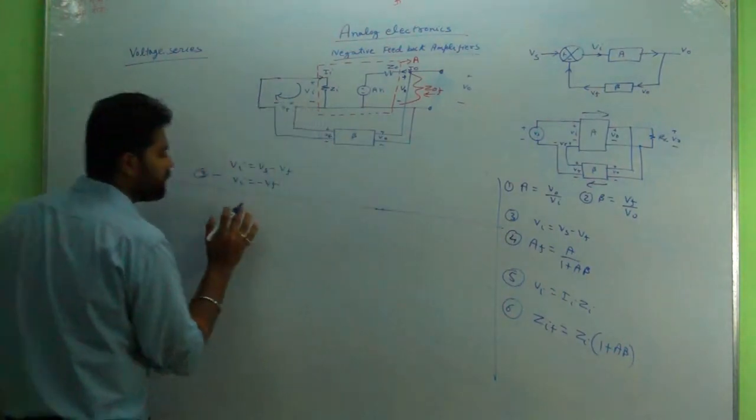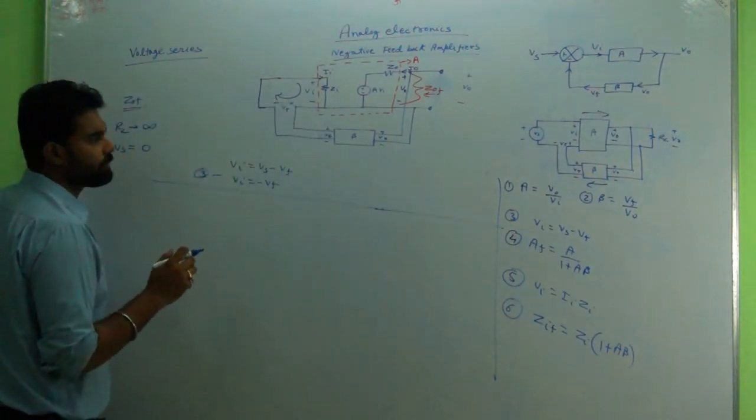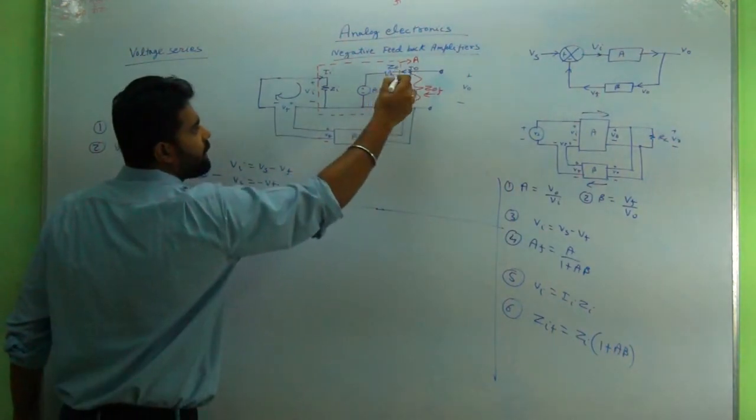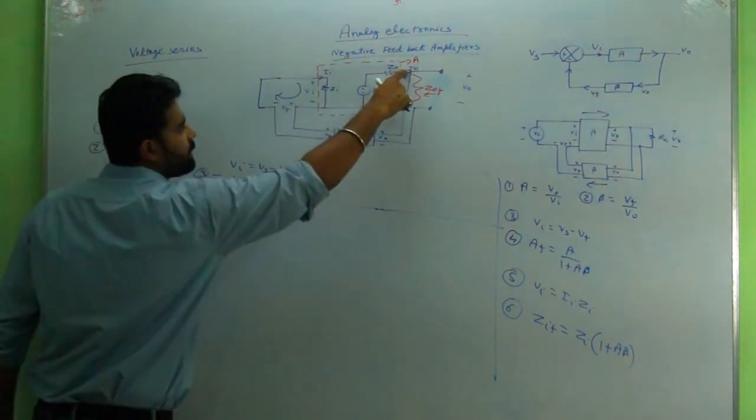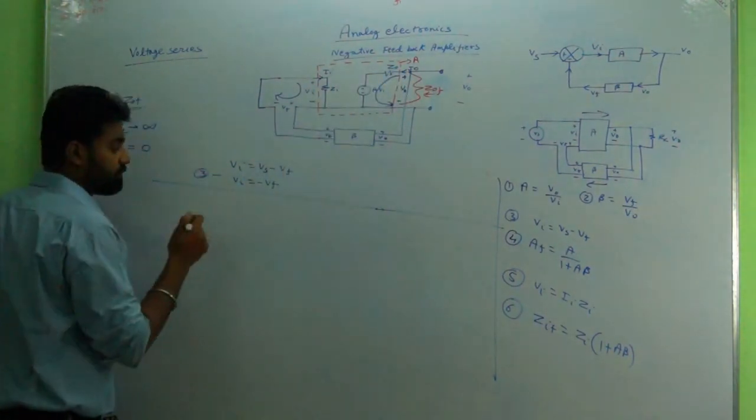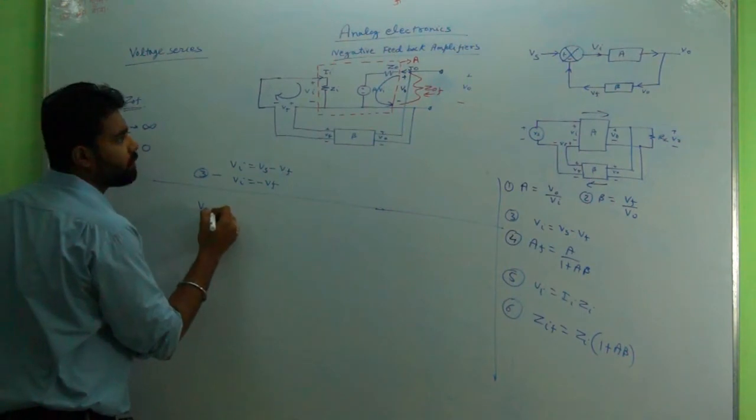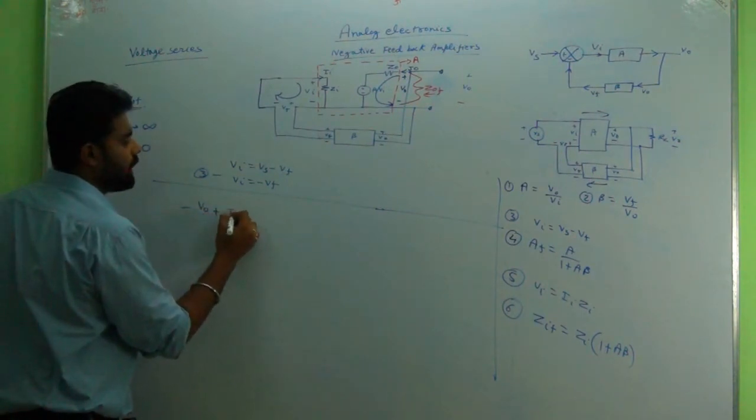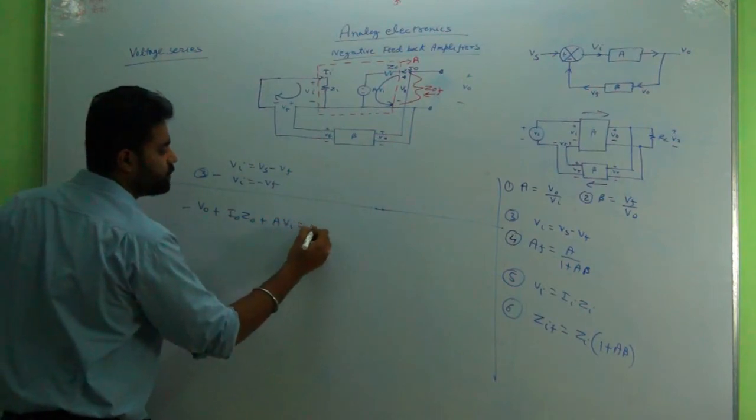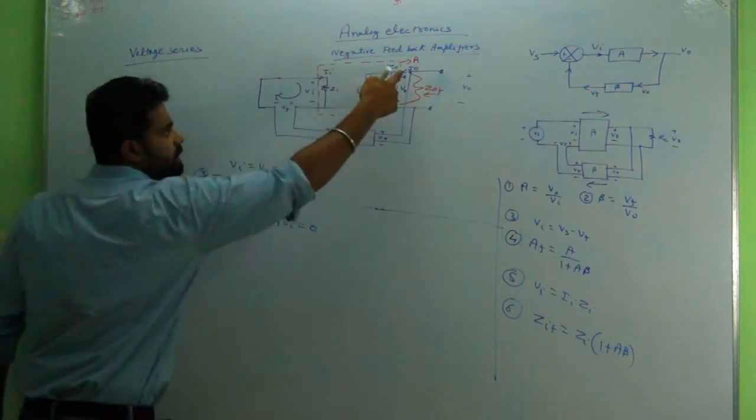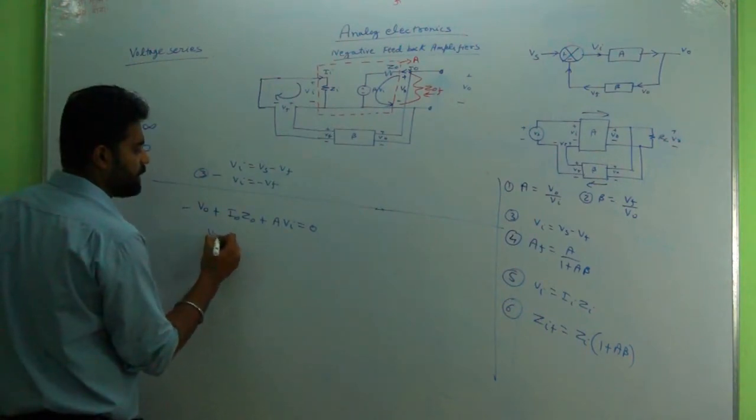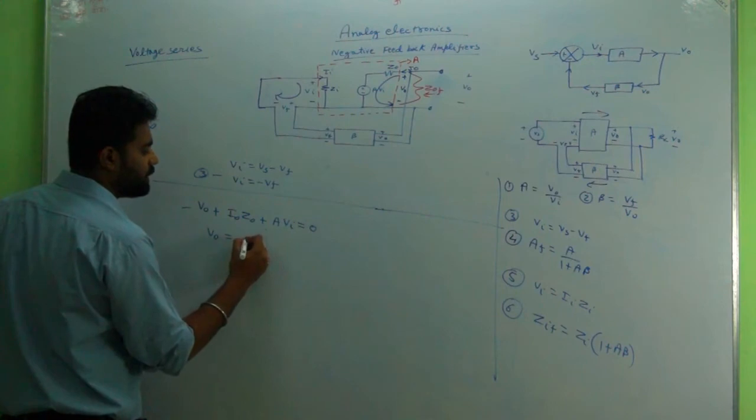Look here, it's a loop. We can start from anywhere. I'll write the KVL. What is this is the voltage, that is V0, so V0 equals minus V0 plus I0 Z0 plus A into Vi equal to zero. This is the KVL, output circuit KVL. It can be written as V0 equals I0 Z0 plus AVi.